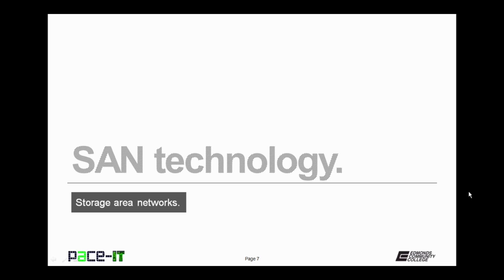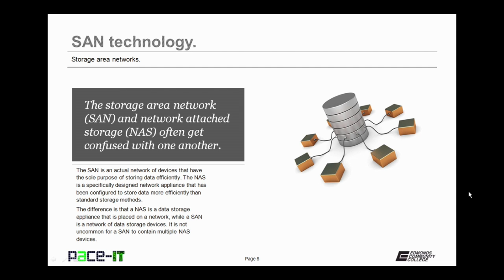It's time now to discuss some SAN technology. The Storage Area Network, or SAN, and the Network Attached Storage, or NAS, often get confused with one another, but they are different. The SAN is an actual network of devices that have the sole purpose of storing data efficiently. On the other hand, the NAS is a specifically designed network appliance configured to store data more efficiently than standard storage methods. The difference is that a NAS is a data storage appliance placed on a network, while a SAN is a network of data storage devices.